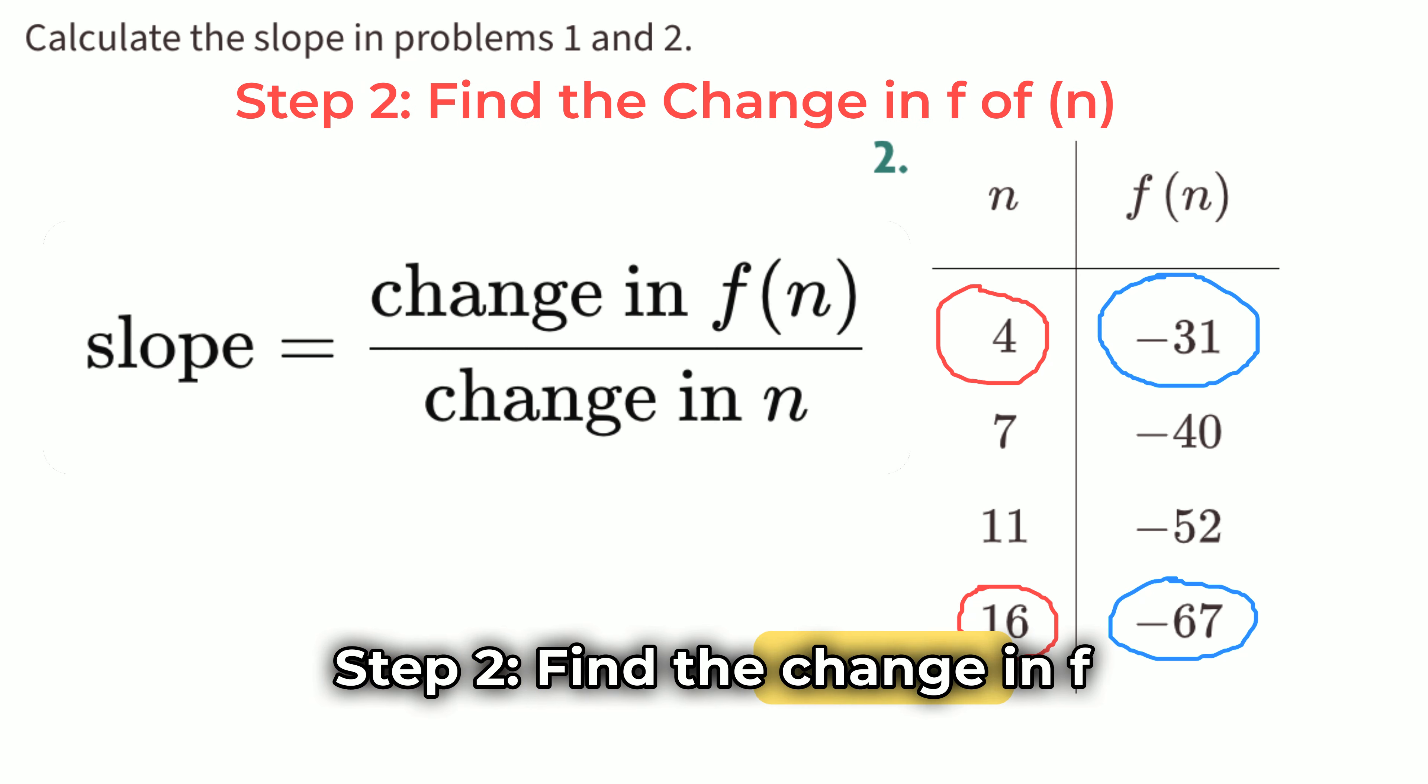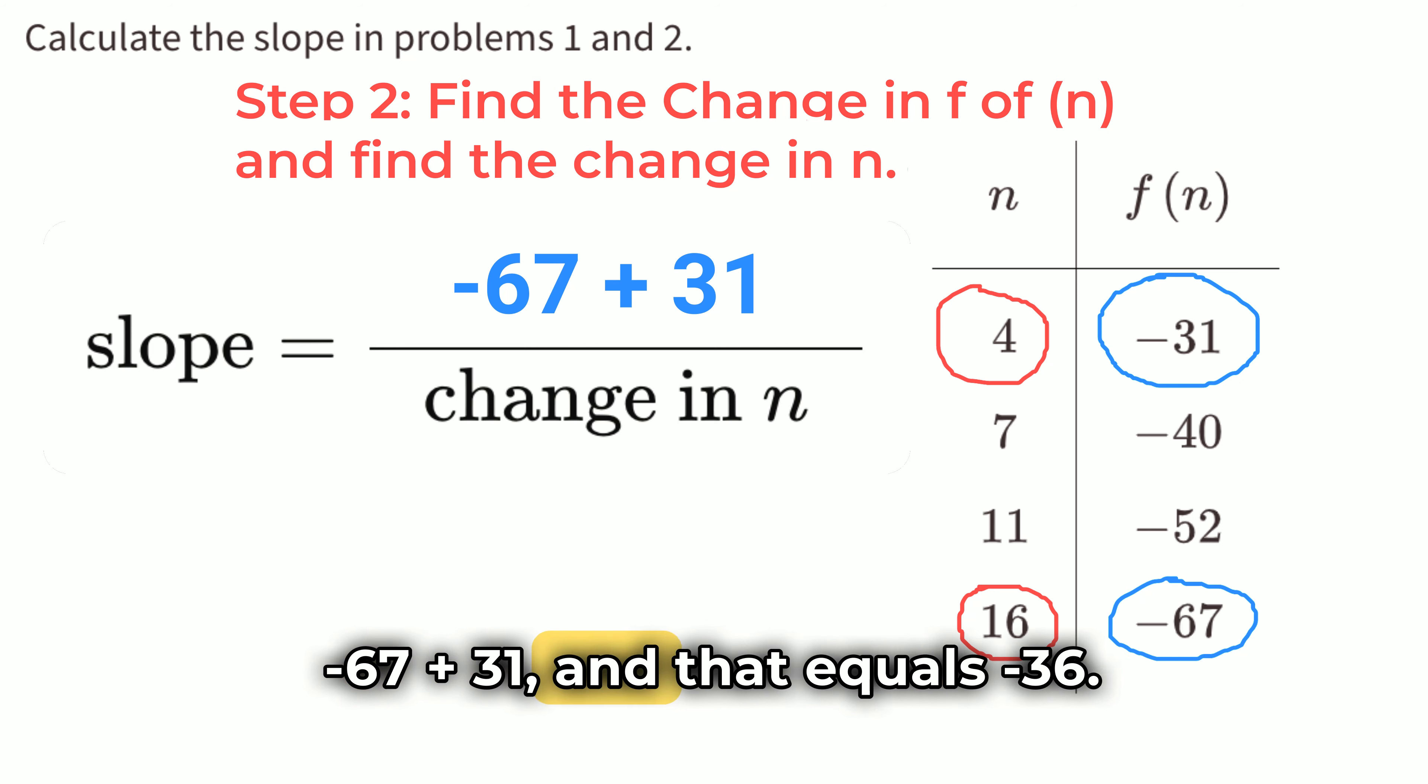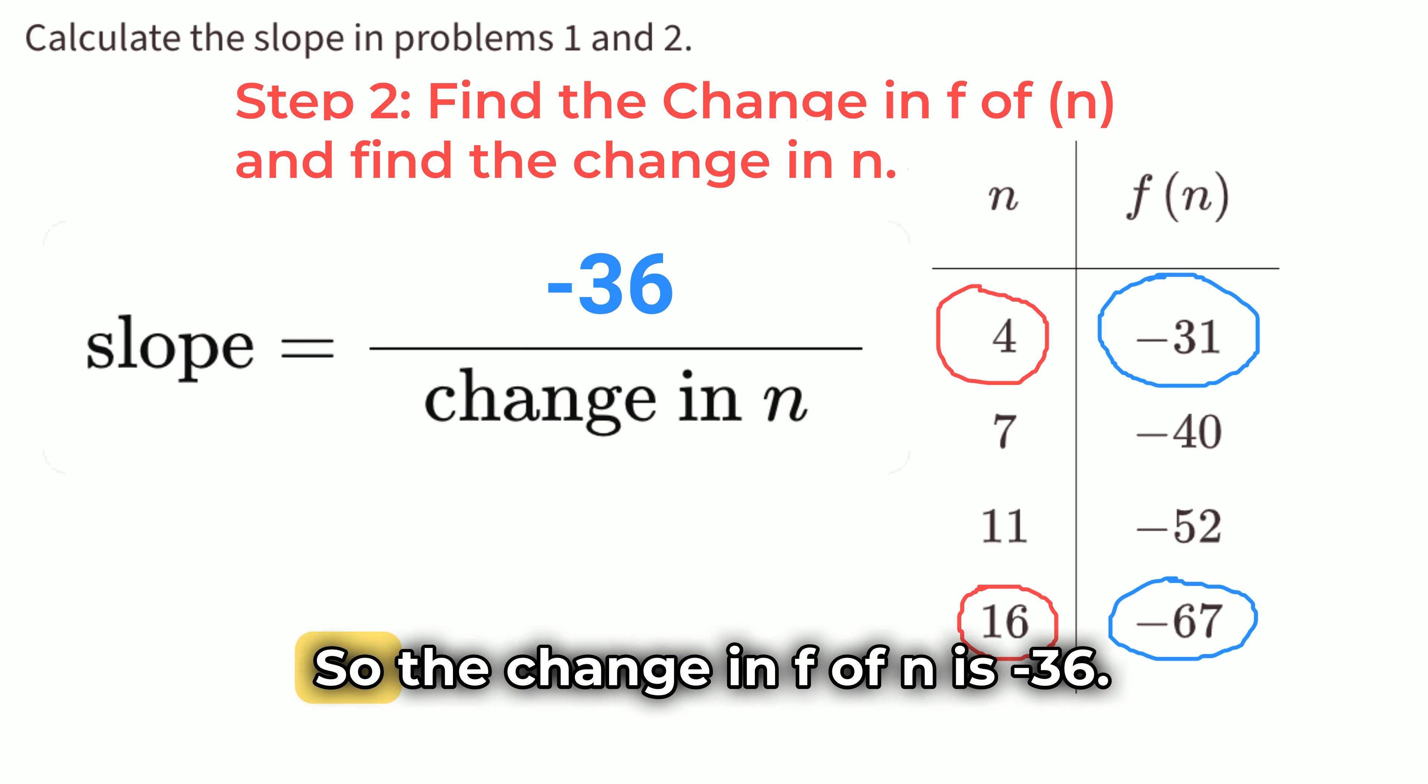Step 2. Find the change in f of n and find the change in n. The change in f of n is negative 67 minus negative 31, which is the same as negative 67 plus 31, and that equals negative 36. So, the change in f of n is negative 36.